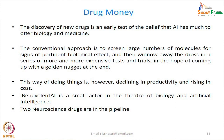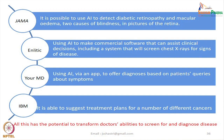Currently we have no preparedness — we keep banking on good luck and host immunity for not getting infectious diseases. New molecules are being discovered through artificial intelligence, including two neuroscience drugs in the pipeline. An article in JAMA showed that diabetic retinopathy and macular edema — causes of blindness — can be detected through artificial intelligence. There are many companies developing AI apps to diagnose patient symptoms and conditions. AI is able to suggest treatment plans for a number of different cancers, with the potential to transform doctors' abilities to screen for and diagnose disease.